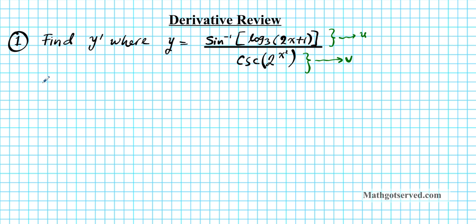A quick review of the quotient rule: it tells us that (u/v)' is equal to v·u' minus u·v' over v squared. What we're going to do is find u' and v' individually and then plug those answers into that result.